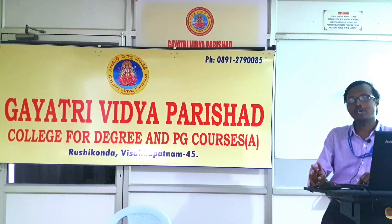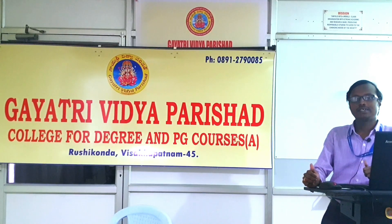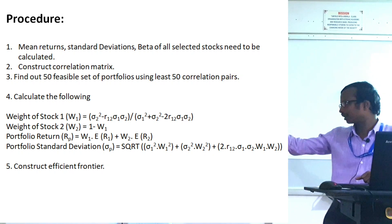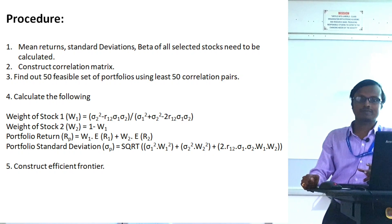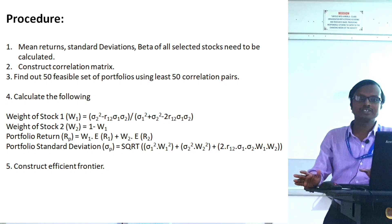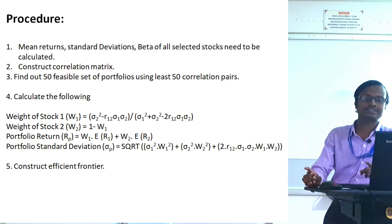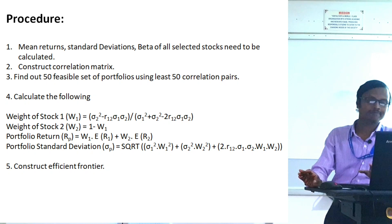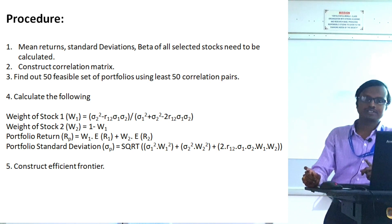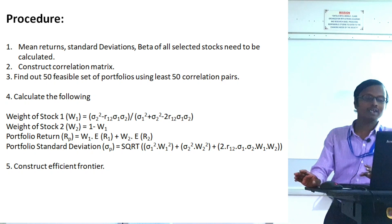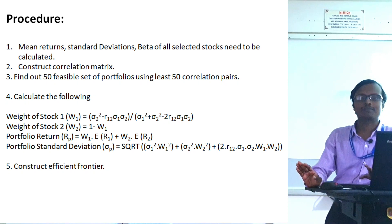In this model we are constructing a portfolio using a two-stock model developed by Markowitz, meaning a portfolio contains only two stocks. The formula to calculate the weight of stock one is: W1 = (σ2² − r12·σ1·σ2) / (σ1² + σ2² − 2·r12·σ1·σ2), where σ2 is the standard deviation of stock 2 and r12 is the correlation coefficient between the returns of the two stocks.